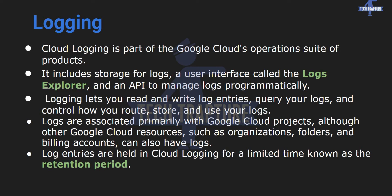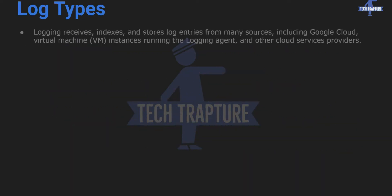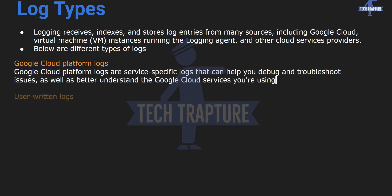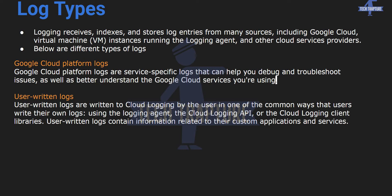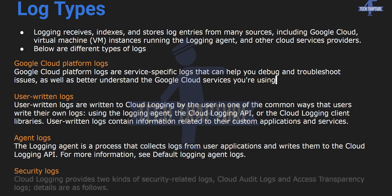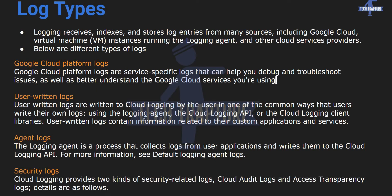Now I will go to my cloud console and show you the logging UI. But just before that, we will see what the different log types are. We can collect logs from different sources in Google Cloud Logging. This can be Google Cloud Platform logs — logs collected from all Google Cloud services — then user-written logs, where users interacting with Google Cloud through API can write logs using the Cloud Logging API. Then we have agent logs, where we can install a logging agent on our VM instance to collect application logs. Then we have security logs — cloud audit logs, access transparency logs, and activity logs.